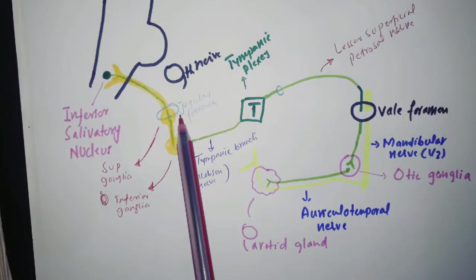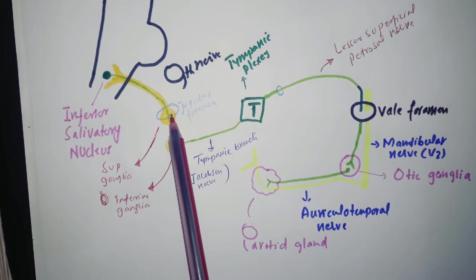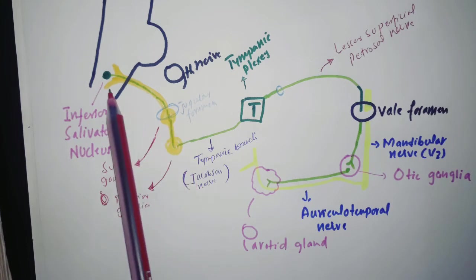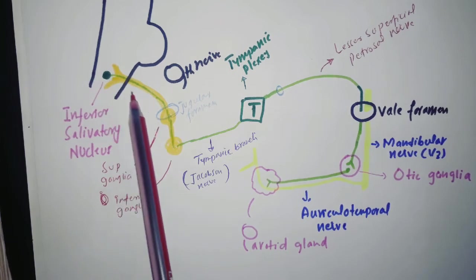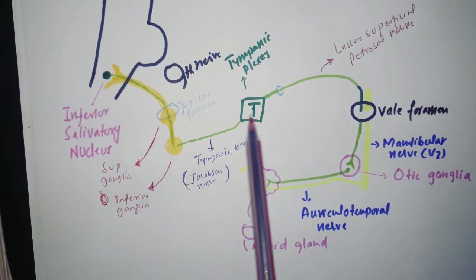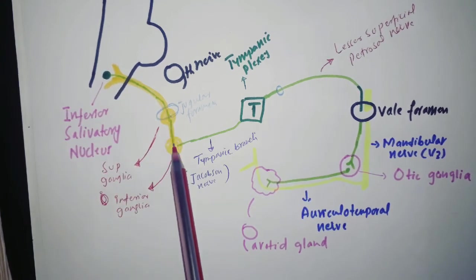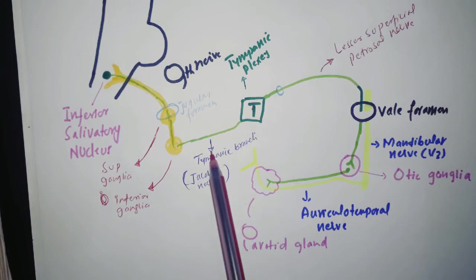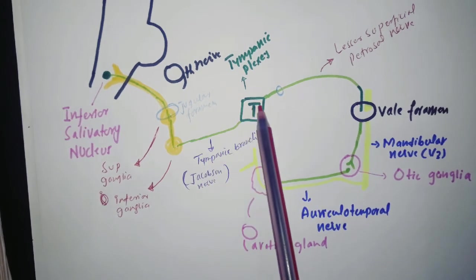The glossopharyngeal nerve leaves the skull through the jugular foramen. At the foramen level it has a superior ganglia, and below that an inferior ganglia. The nucleus responsible for parotid gland supply is the inferior salivatory nucleus. The fibers of the inferior salivatory nucleus leave the glossopharyngeal nerve at the inferior ganglia as the tympanic branch, which goes on to form the tympanic plexus in the middle ear cavity.